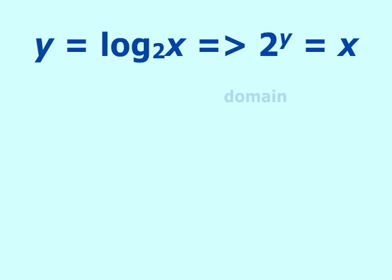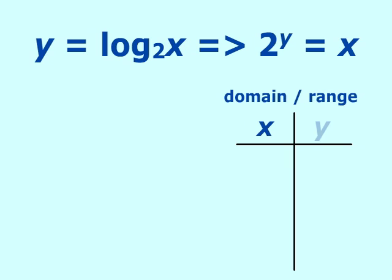And again, make your domain range table. Only we're going to do it a little backwards. We're still going to put it x, y. But we're going to fill in for y first. So the first value we always try to put in is 0. And then we'll put in 1, then negative 1, 2, and negative 2.